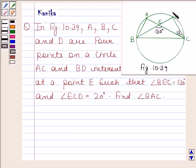A, B, C and D are four points on a circle. AC and BD intersect at a point E such that angle BEC is equal to 130 degrees and angle ECD is equal to 20 degrees. Find angle BAC.